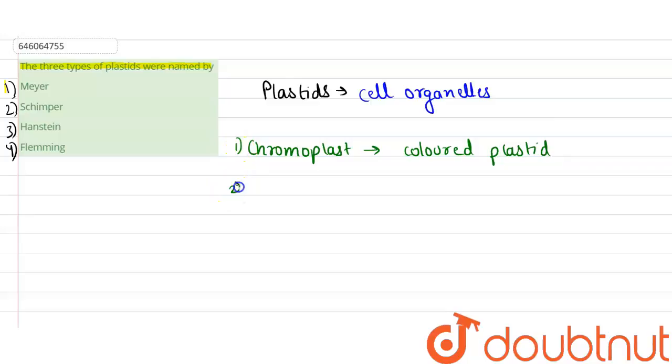Second one was chloroplast. Chloroplast, which has specifically the green plastid.